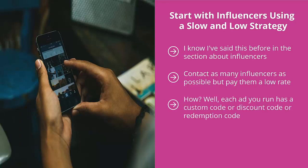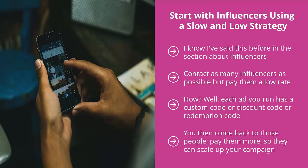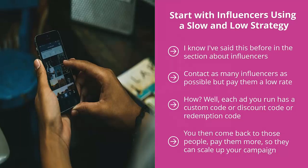Each ad you run has a custom discount or redemption code, so you'll be able to see which ones actually produce results. You then come back to those people and pay them more so they can scale up your campaign — they're clearly credible enough with their followers to drive actual sales.